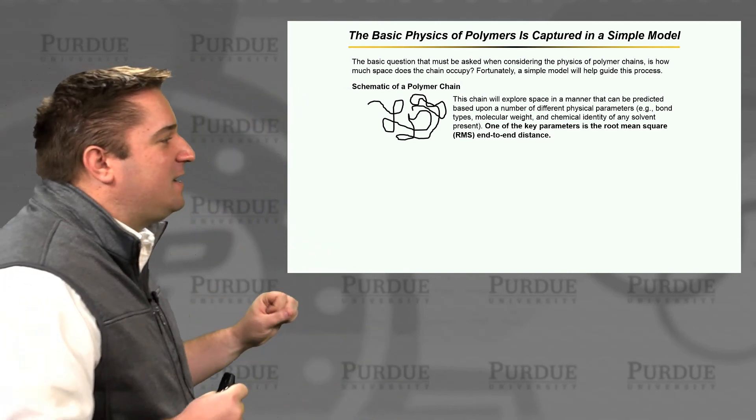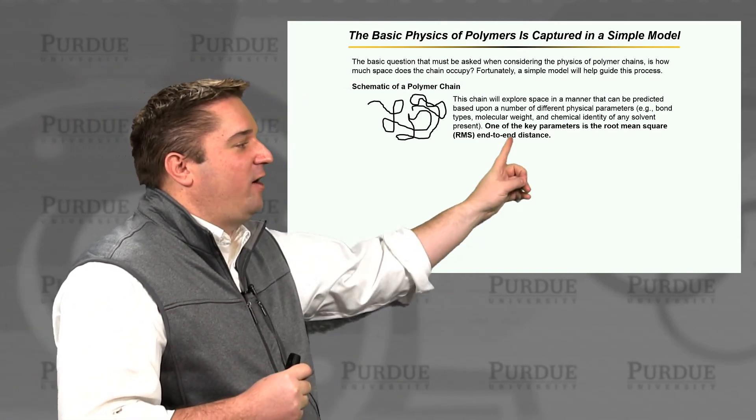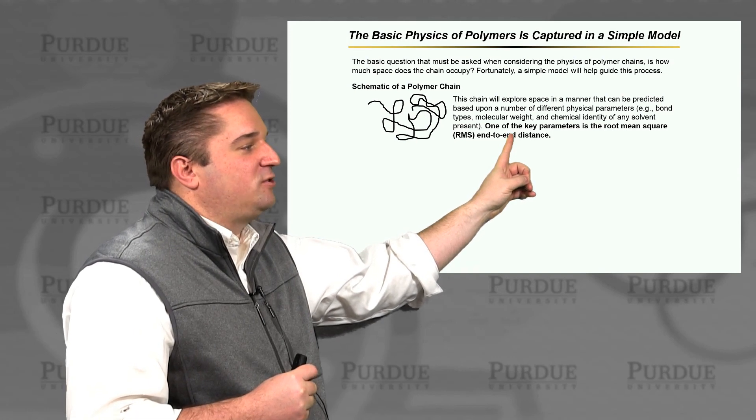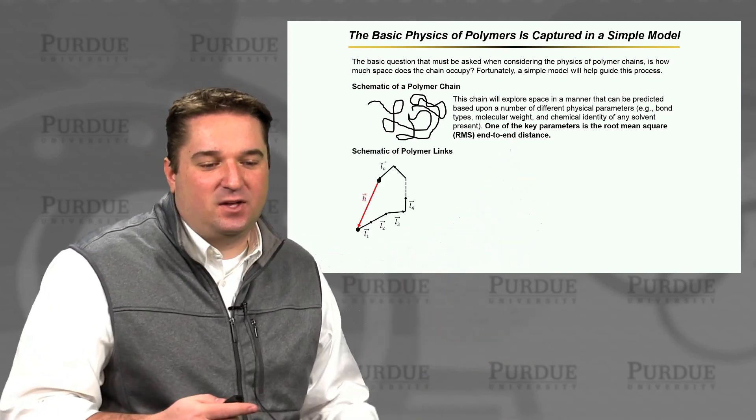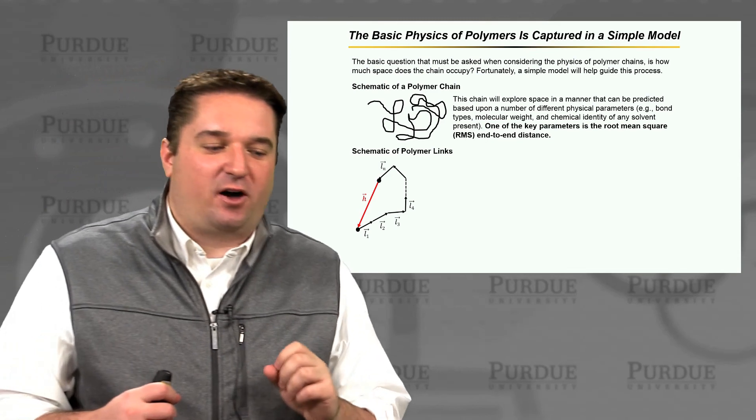One of the key ways in polymer science that we look at this is something called the root mean square end-to-end distance. And this end-to-end distance can be thought of in the following way.